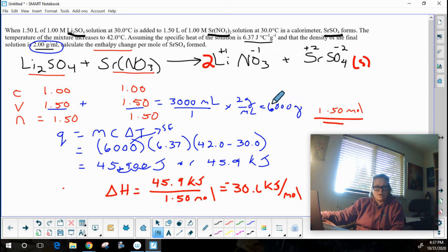I figured out how many grams I had in the solution that went there. I had my specific heat. I had my change in temperature. Figured out how many kilojoules were released for 1.50 moles. Divided those two to figure out my enthalpy reaction. Negative 30.6 kilojoules per mole. I hope this made sense. Have a good evening.